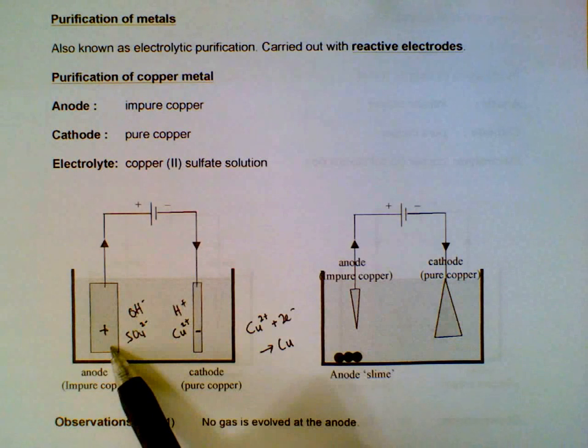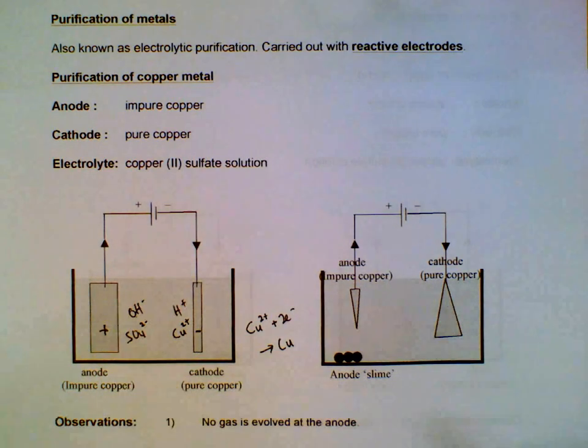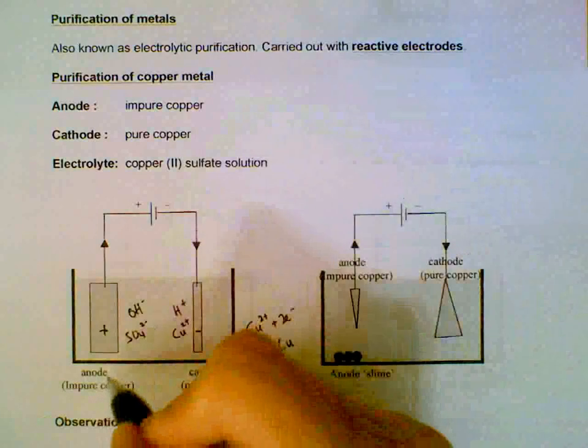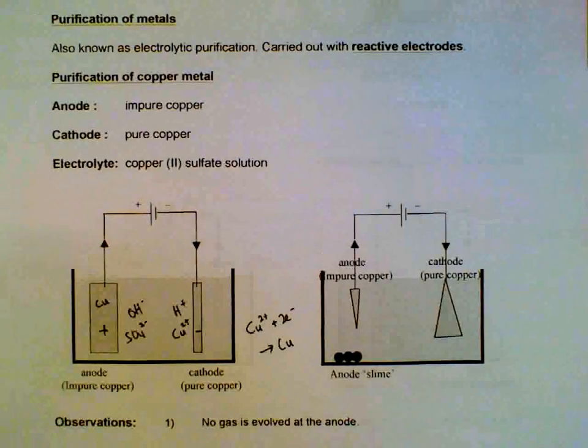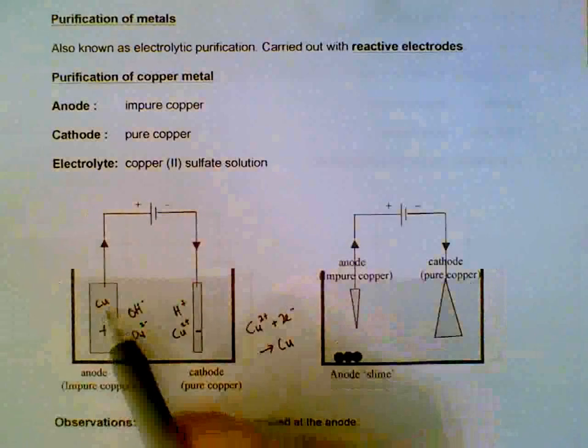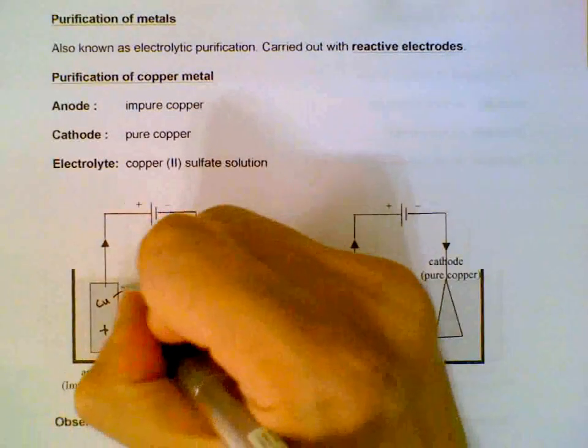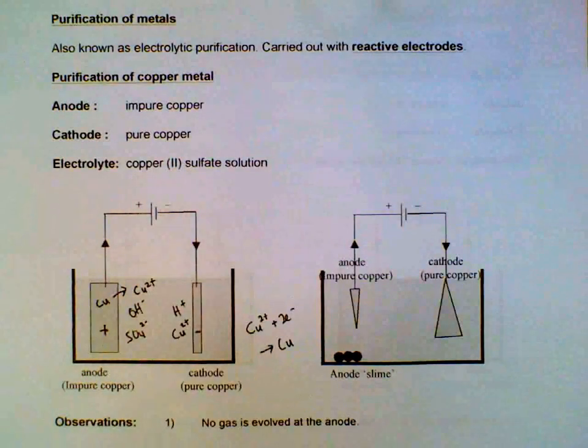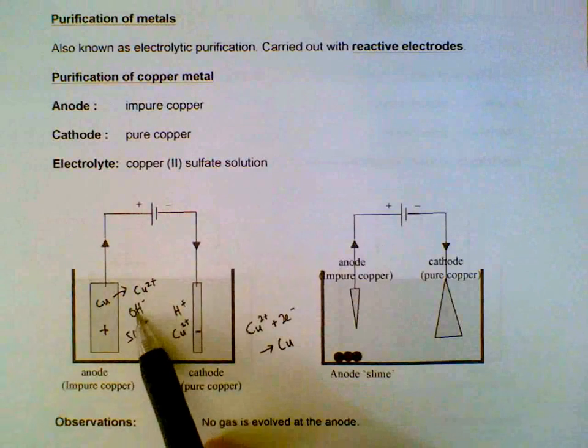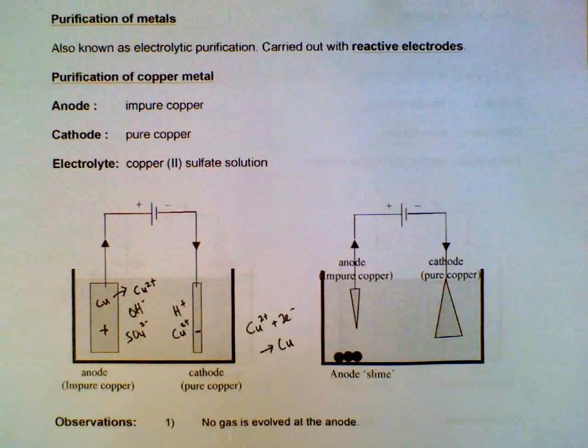But now we are using copper electrode. This is an active anode. Active anodes they themselves become oxidized. So what we have will be copper - we have the copper metal here. The active anode will be oxidized and contributes copper ions into the solution. It doesn't oxidize the hydroxide.